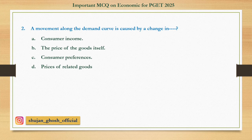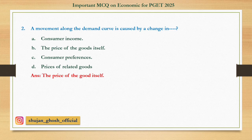Question number two: A movement along the demand curve is caused by a change in — option A: consumer income; B: the price of the good itself; C: consumer preferences; D: prices of related goods. Answer: the price of the good itself.